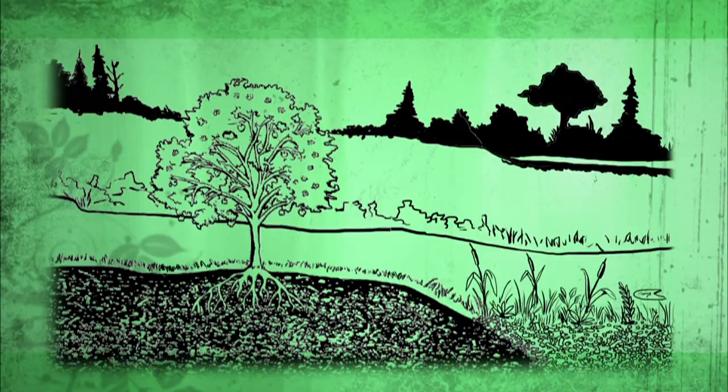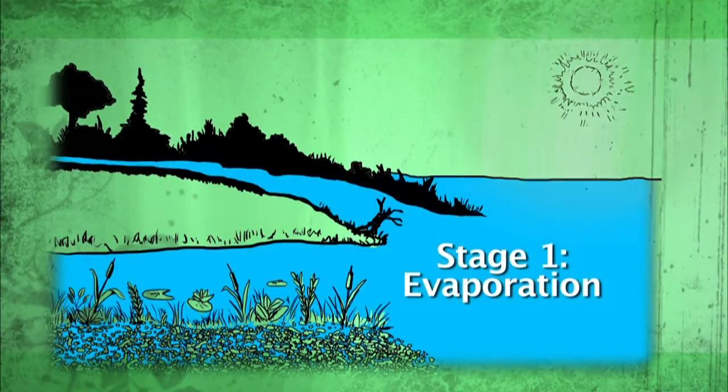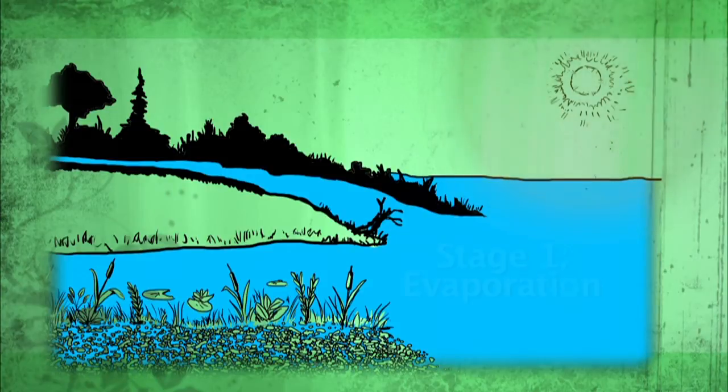The first stage in the water cycle is evaporation. As the sun's energy heats the surface of our lakes, rivers, plants, and soil, the water begins to turn to water vapor. Steam coming off hot liquid is one way we can see water vapor.